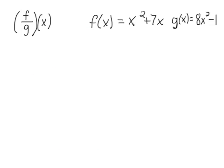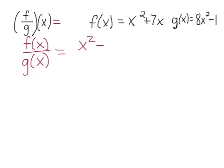Our last operation is division. f is in the numerator — you can also see this written as f(x) over g(x). When we write this out we have x squared plus 7x divided by 8x squared minus 1.